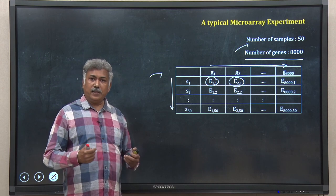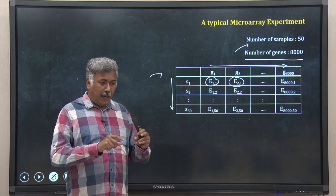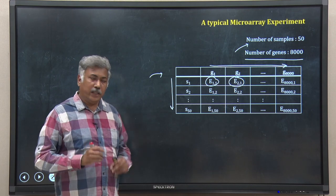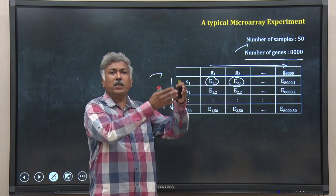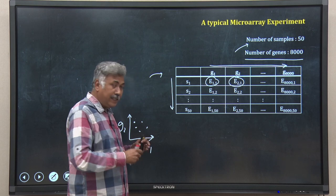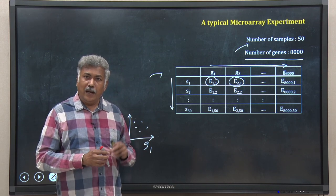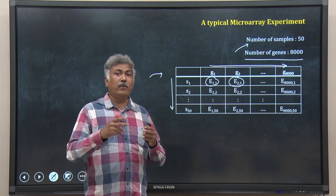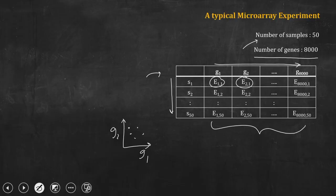Now how should I visualize it? In the earlier case with 2 genes and 10 samples, I created a gene expression space that is 2-dimensional — G1 on one axis, G2 on the other, and each point is a sample. In this new case, if I consider each sample as a dot in gene expression space, what is the dimension? Earlier with 2 genes it was 2-dimensional, then with 3 genes it was 3-dimensional. But now I have 8000 genes — that means it is an 8000-dimensional gene expression space.